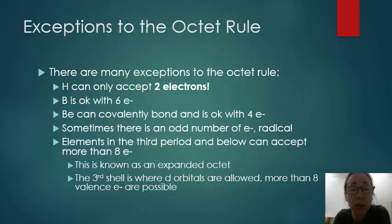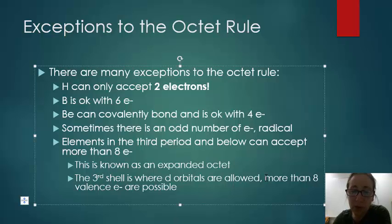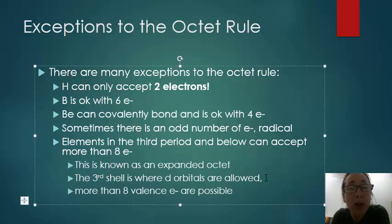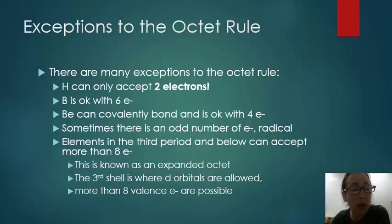Elements in the third row and below can accept more than eight electrons. This is known as an expanded octet, and it occurs in the third row or below because in the third shell we have D subshell allowed, and the D subshell can accept ten electrons. So, we're allowed to have more than eight because the D subshell allows us more electrons.